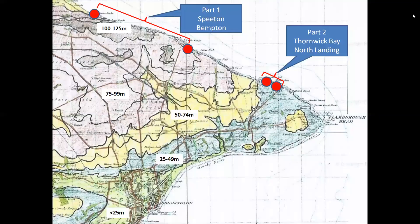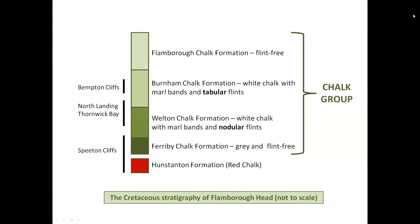In the first part of the tour we examined sections in the cliffs at Speeton and Bempton, the highest on the headland, and in part two we moved eastwards to examine beach sections at Thornick Bay and North Landing. Together these localities provided windows into the stratigraphy of the Lower Cretaceous Hunstanton Formation and the Upper Cretaceous Chalk Group from its base up to the High Chironian of the Burnham Formation. We also noted the increasing thickness and lower base level of the Pleistocene deposits as we approached the eastern part of Flamborough Head and also evidence of pre-Devensian paleo valleys.